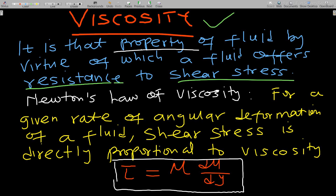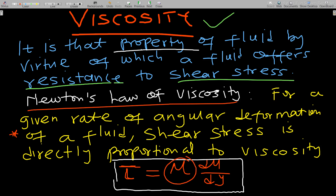Now let's discuss Newton's Law of Viscosity, which is very important. It states that for a given rate of angular deformation of a fluid, shear stress is directly proportional to viscosity. The formula is: tau = mu × (du/dy), where tau is the shear stress and mu is the viscosity.